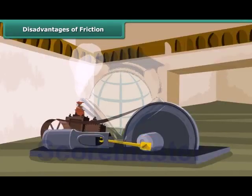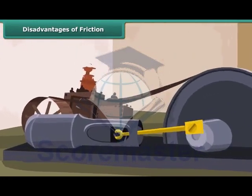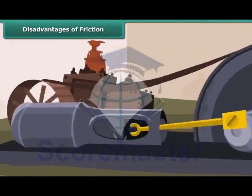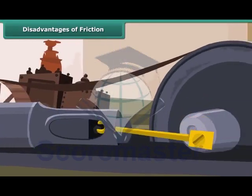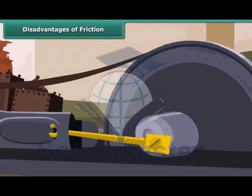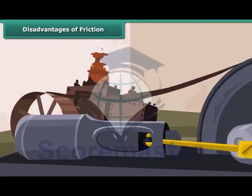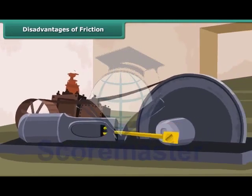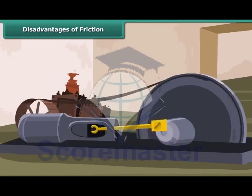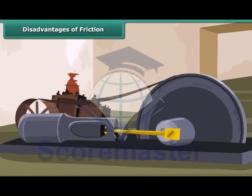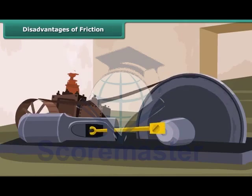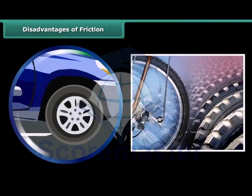Friction reduces the efficiency of machines. Some of the force applied to run a machine is lost in overcoming the friction between its moving parts. When the moving parts of a machine rub together, a lot of heat is produced due to friction, which can damage the machine. Due to friction, the rubbing parts of a machine wear out gradually, and the tyres of a vehicle also wear and tear due to friction.